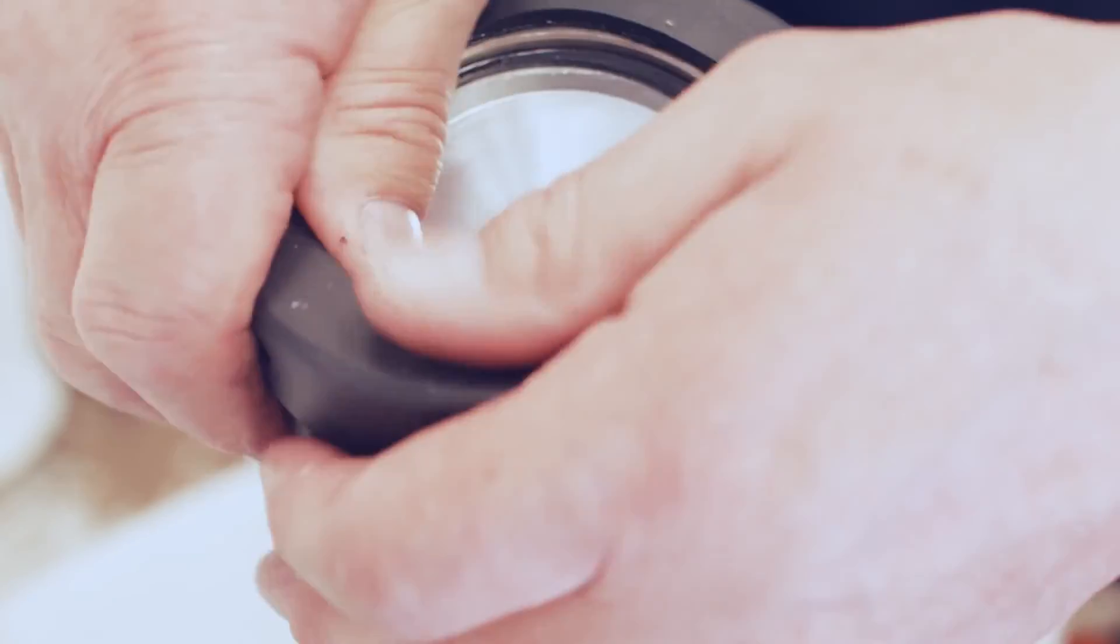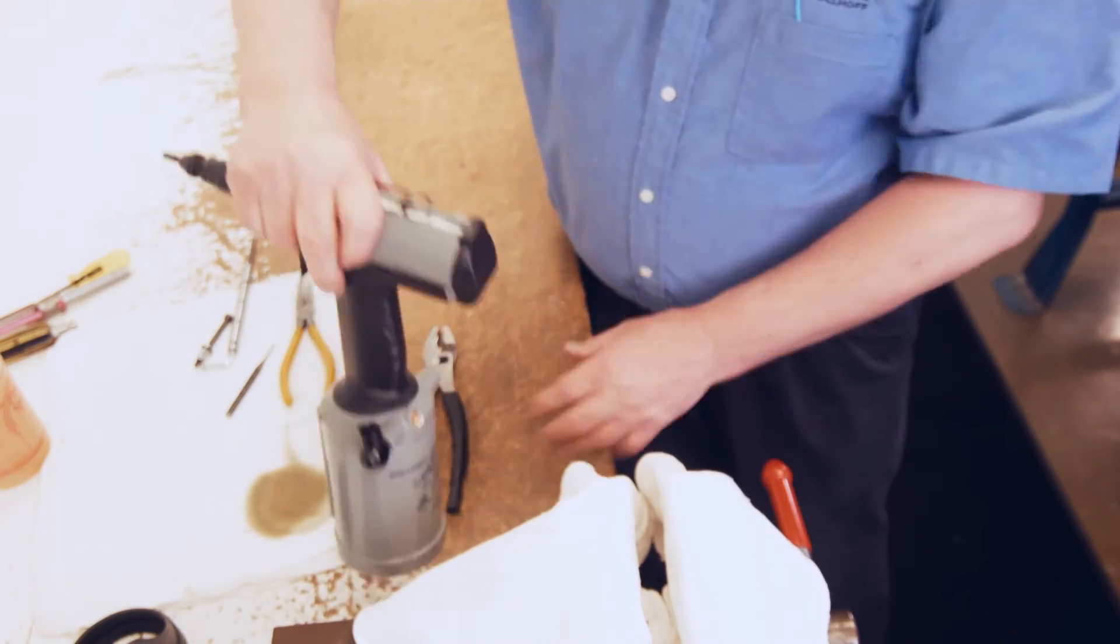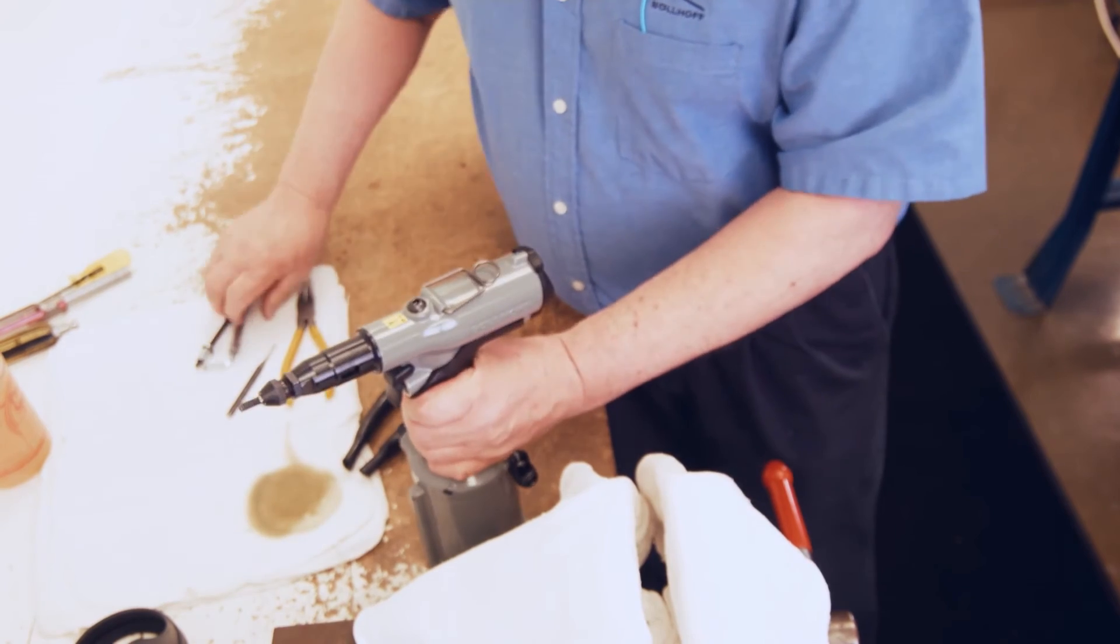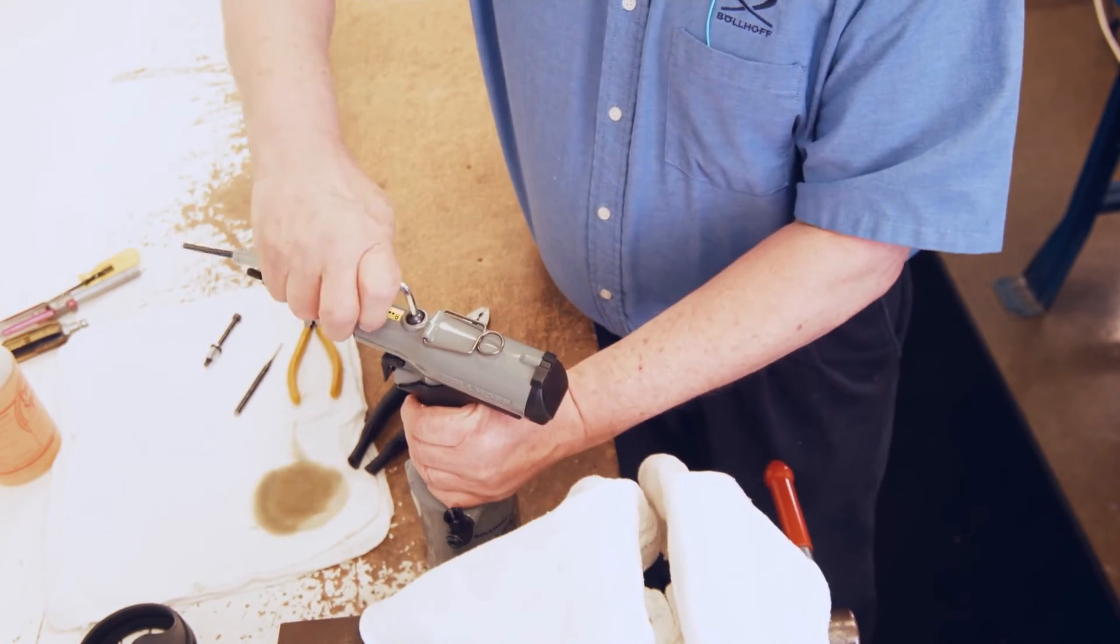Step 14, install the black rubber boot. Step 15, remove the tool from the clamp and set up right. Remove the screw on the top of the gun to drain excess oil and release any trapped air.